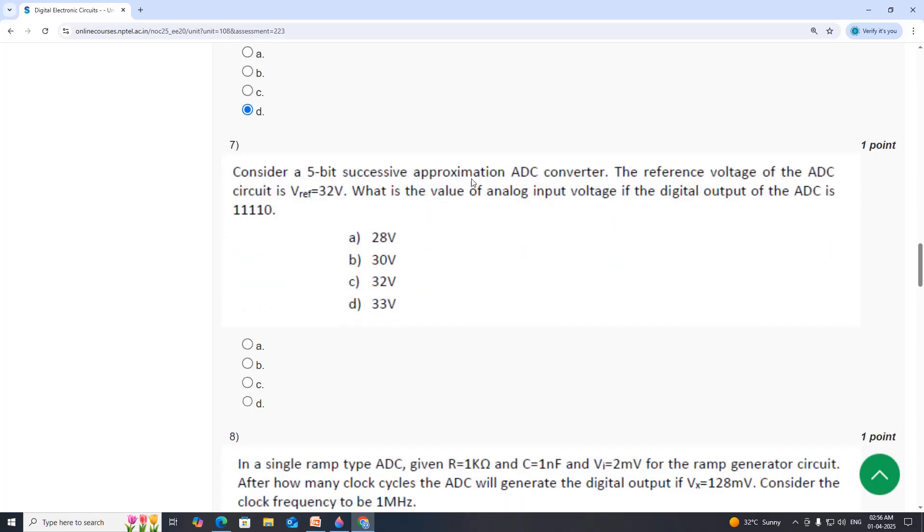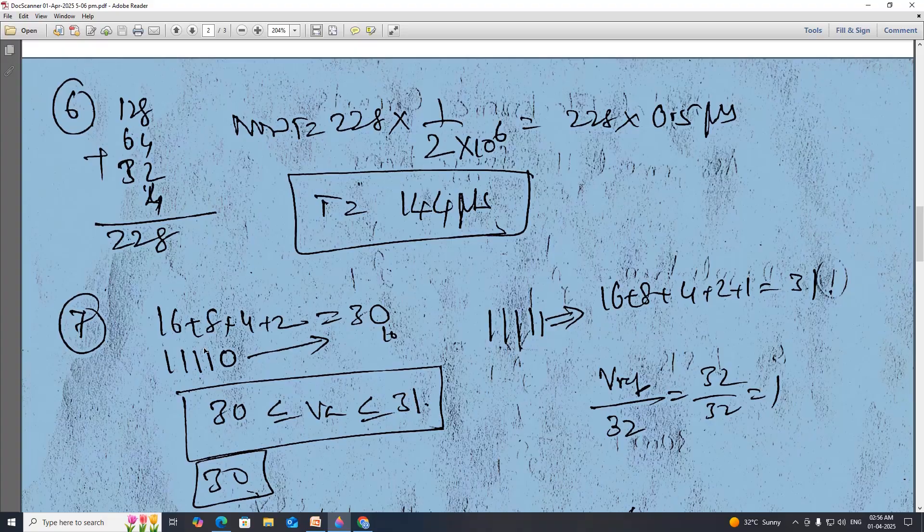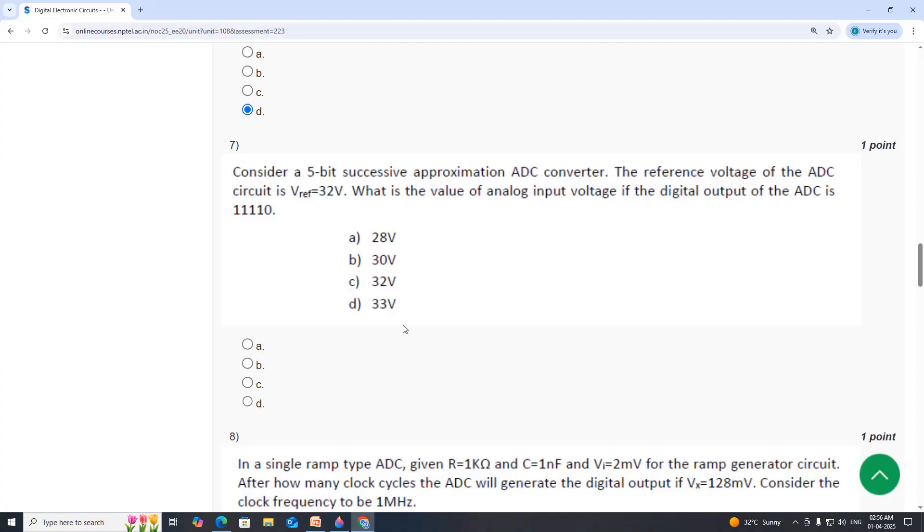Seventh one. Consider 5-bit successive approximation ADC converter. The reference voltage of ADC is 32 and the analog input voltage of ADC is for this digital input. So convert this into digital equivalent that is 30. Similarly, convert this into decimal value, that is 31. So analog input voltage is between 30 and 31. So minimum is 30 and maximum is 31 volt. But here V reference is 32, 32 by 32 is equal to 1 volt. So therefore it is 31 volt. So option D.